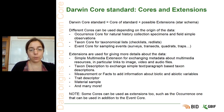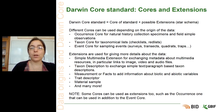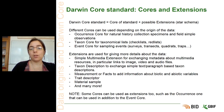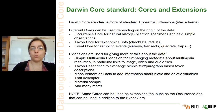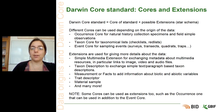If you want to give more details about taxon descriptions, you can use the taxon description extension to exchange simple text or paragraph-based taxon descriptions. You can also use measurement of facts to add information about biotic and abiotic variables. Other extensions include trait descriptor or material sample — for example, if you have DNA samples in your collection that you want to link to specimens. Note that some cores can also be used as extensions, such as the occurrence core used alongside the event core.